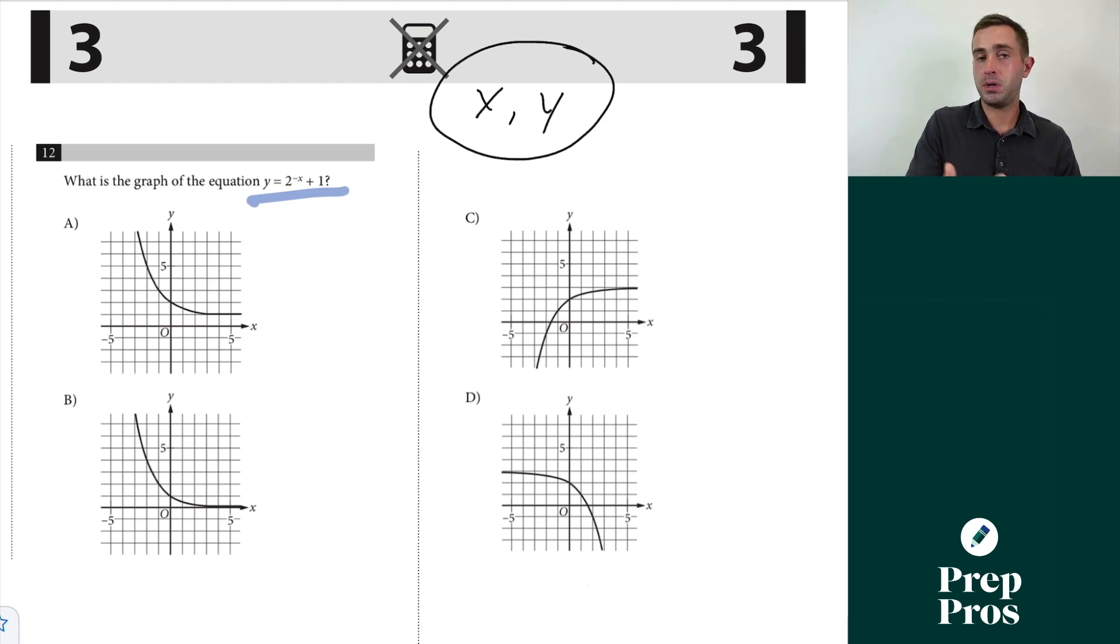The first thing I always want to do is just pick an easy x value to plug in. The easiest x value for any graphing question is always see if you can plug zero in because that's going to let you identify what y-intercept is correct. Well two to the negative zero is just the same as two to the zero plus one and that's just going to equal one plus one.